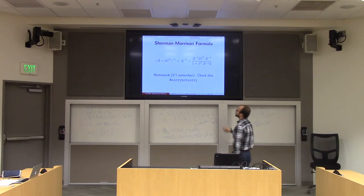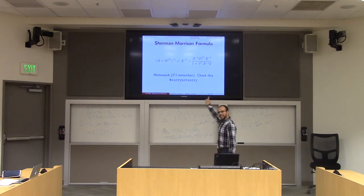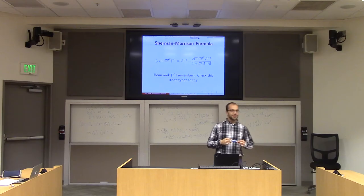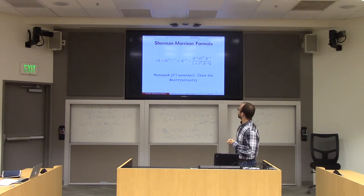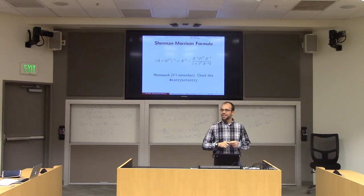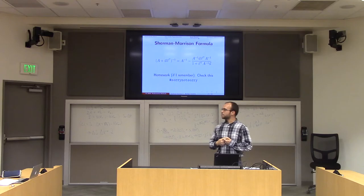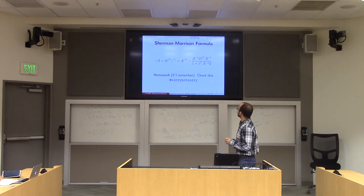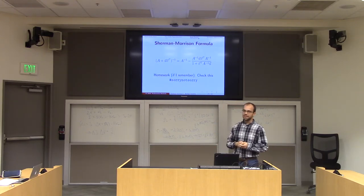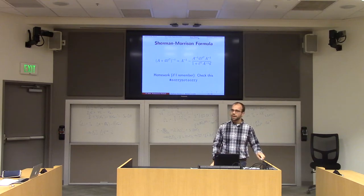It's going to be on your homework. To check this result, if you ever want to verify that a matrix is the inverse of another, all you have to do is multiply them and see that you get the identity. I probably won't walk you through how Sherman-Morrison originally thought of this.